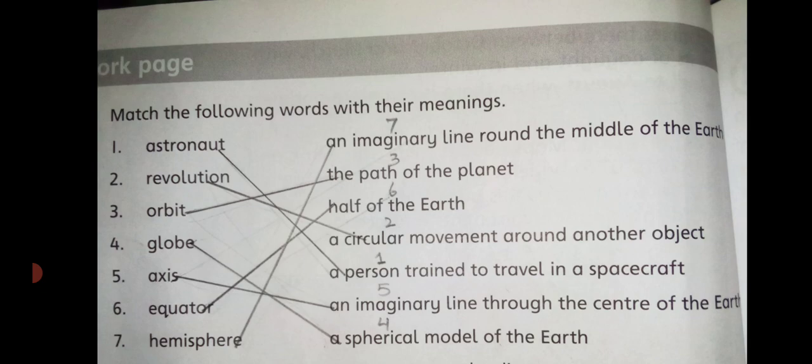The next word is Globe. You have to match globe with: a spherical model of the Earth. I have shown you the globe and the picture — it is a spherical model of our planet Earth. After that, number 5 is Axis. The meaning is: an imaginary line through the center of the Earth.